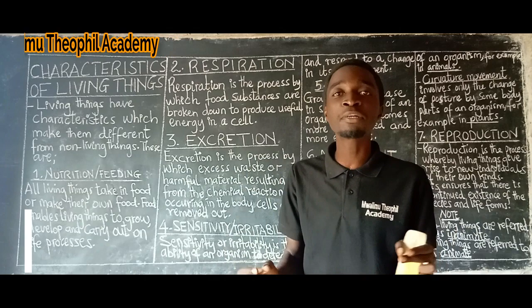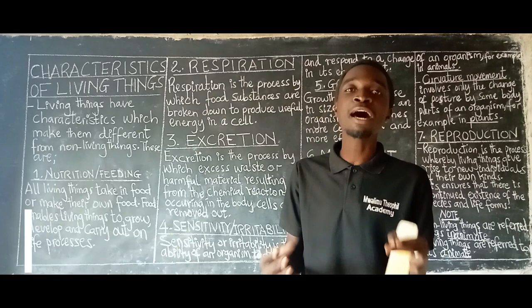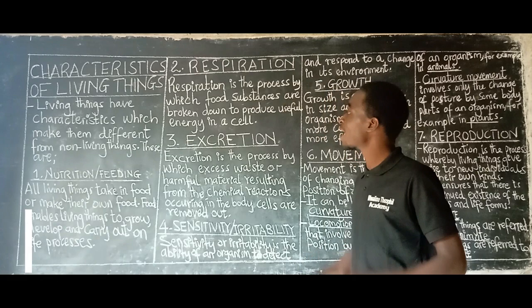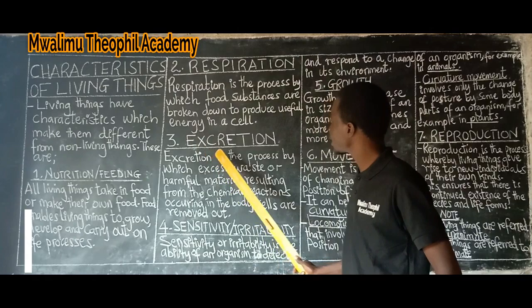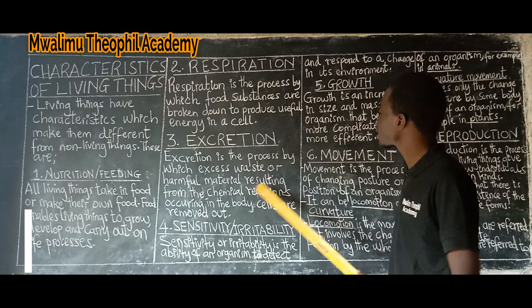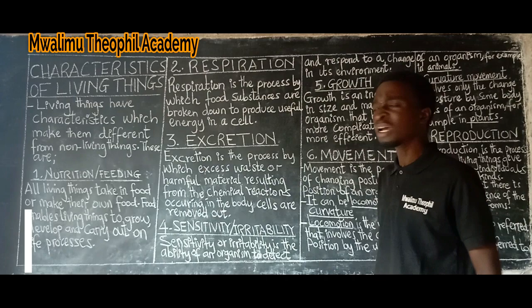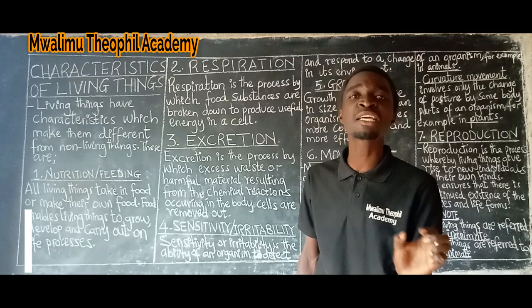The survival of a cell indicates the existence of a living thing. The next feature is excretion. Excretion is the process by which excess waste or harmful material resulting from chemical reactions occurring in the body cells are removed. Excretion is the removal of waste products out of the cell.